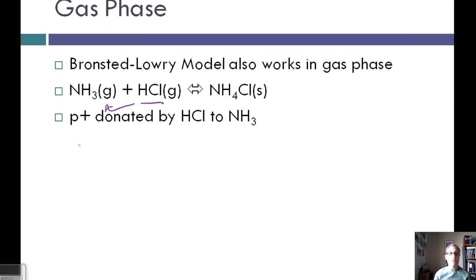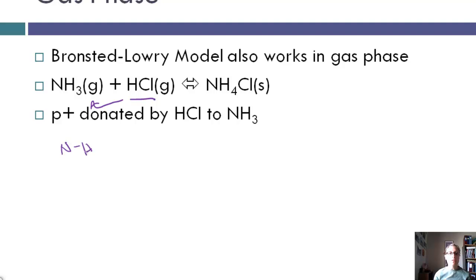If we looked at that in terms of Lewis structures, we have NH3 plus HCl and that's going to NH4 which is existing as an ion and that's a +1 and then we've got our Cl-.